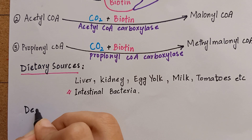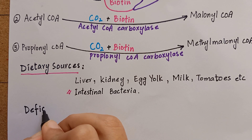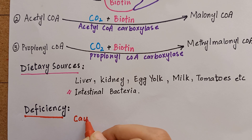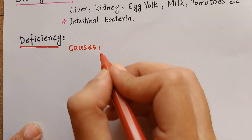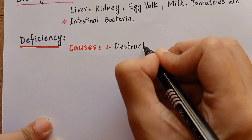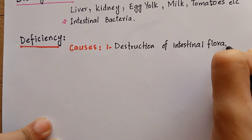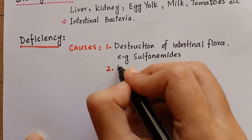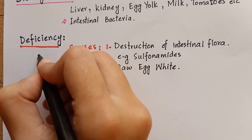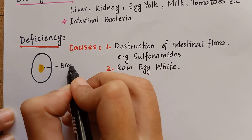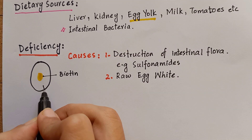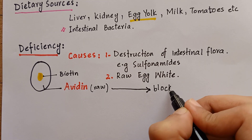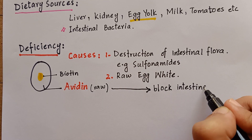Biotin deficiency is uncommon because it is well distributed in foods and also supplied by intestinal bacteria. However, if deficiency occurs, it is associated with two causes. One is due to destruction of intestinal bacterial flora due to prolonged use of drugs like sulfonamides. The second cause is high consumption of raw eggs. Egg yolk is a rich source of biotin, but raw egg white contains a glycoprotein called avidin, which in the intestines tightly binds with biotin and blocks its absorption.